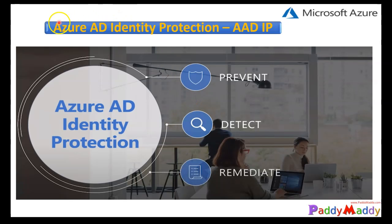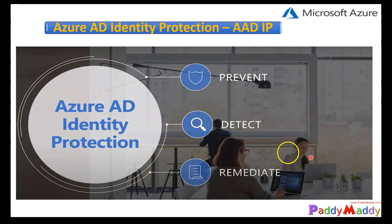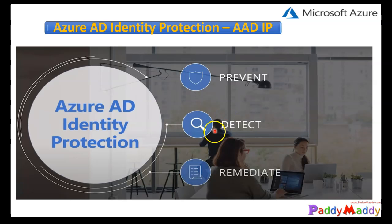Hello and welcome back. In this short lecture, we will be learning about Azure AD Identity Protection, also called AAD IP. Azure Identity Protection is an administrator's toolbox to prevent, detect, and remediate risky users within your organization. It will closely monitor every logon activity for identity compromises using numerous detections.